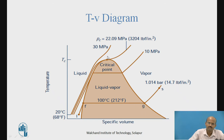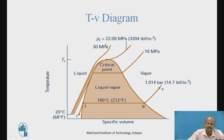The critical point has the properties for water. The critical pressure is 22.09 mega Pascal. At critical point, the latent heat is 0. After this, we'll move to the Mollier's chart.